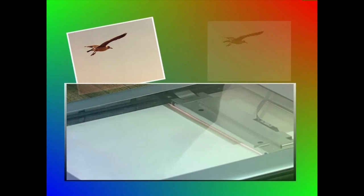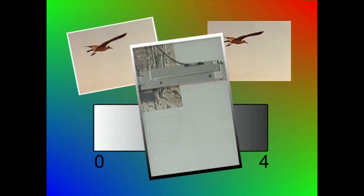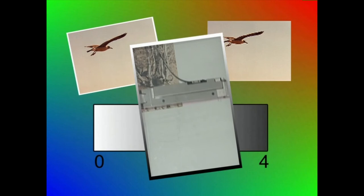Gama dinamikoa. Eskanerrak digitalizatzen ari den irudiaren argi aldaketak grabatzeko duen ahalmenari esaten zaio gama dinamikoa. Ezaugarri hori zerotik laurara doan eskala logaritmiko batean neurtzen da. Eskala horretan, zuri garbia zero da, eta laua beltz izateko oraindik falta zaion tonu oso ilun bat. Dena dela, guri jakitea interesatzen zaiguna zera da: eskanerraren gama dinamikoa zenbat eta handiagoa den, orduan eta kalitate handiagokoak izango dira arekin digitalizatutako irudiak.